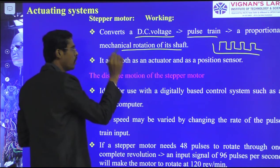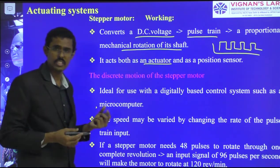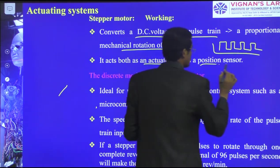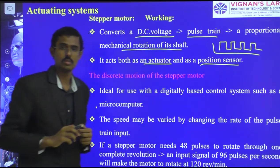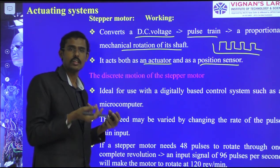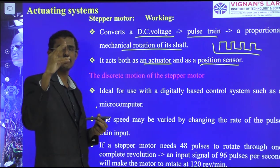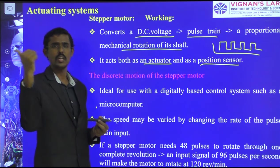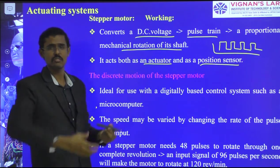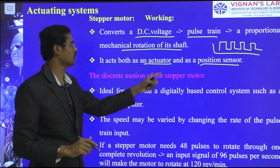One pulse gives one rotation step, second pulse gives the second rotation, third pulse gives the third rotation, and so on. It acts both as an actuator and as a position sensor — we can stop at specific angles such as 90, 30, or 45 degrees. Stepwise control means the shift angles keep reducing: 180, 90, 45, 30, minimum of 7.5 or even 3-4 degrees is possible.